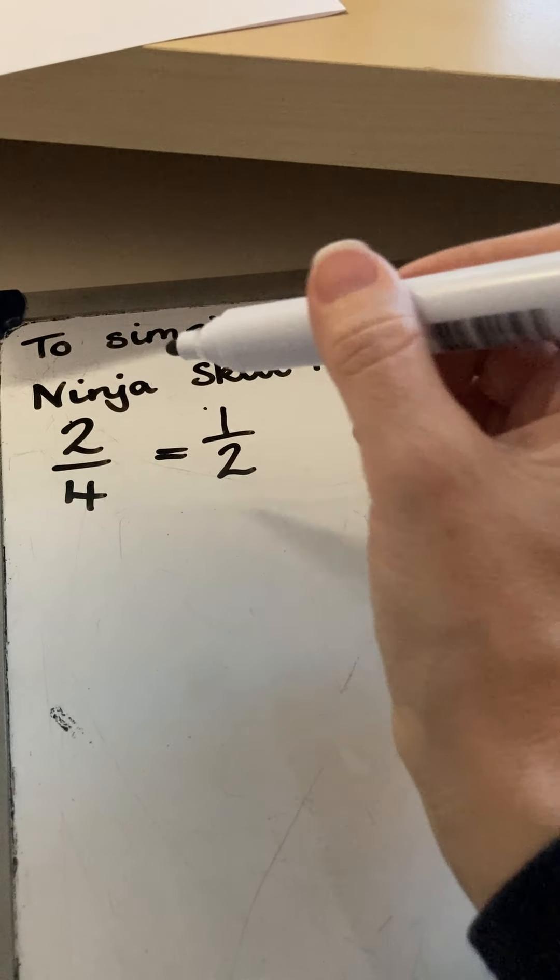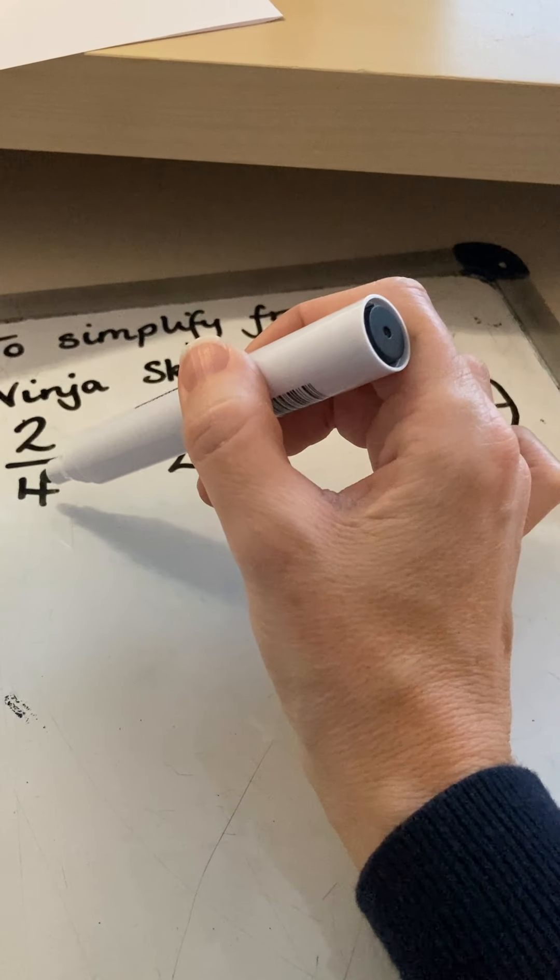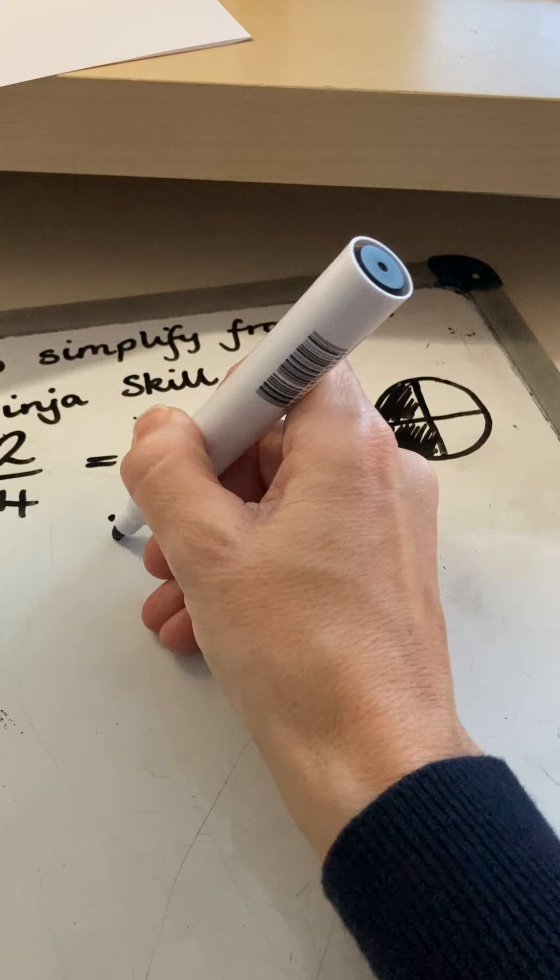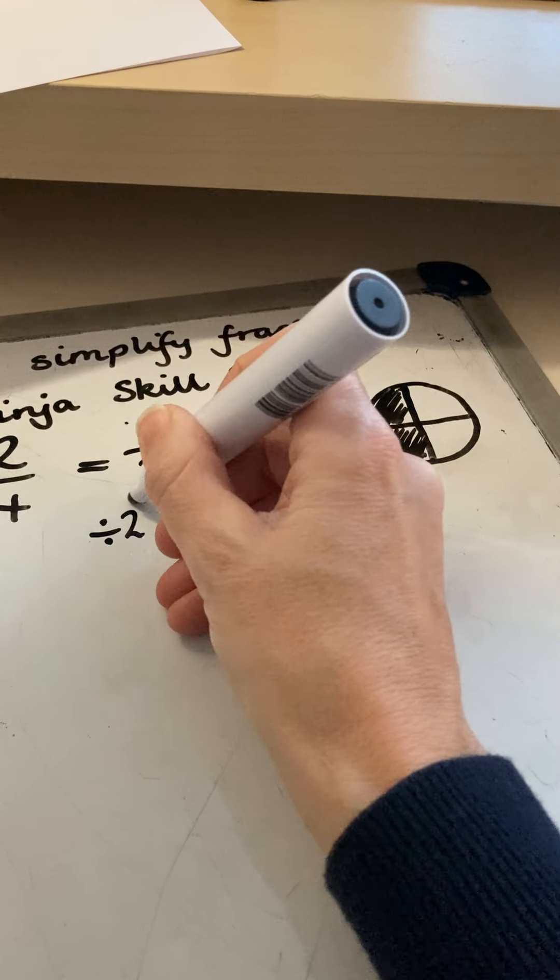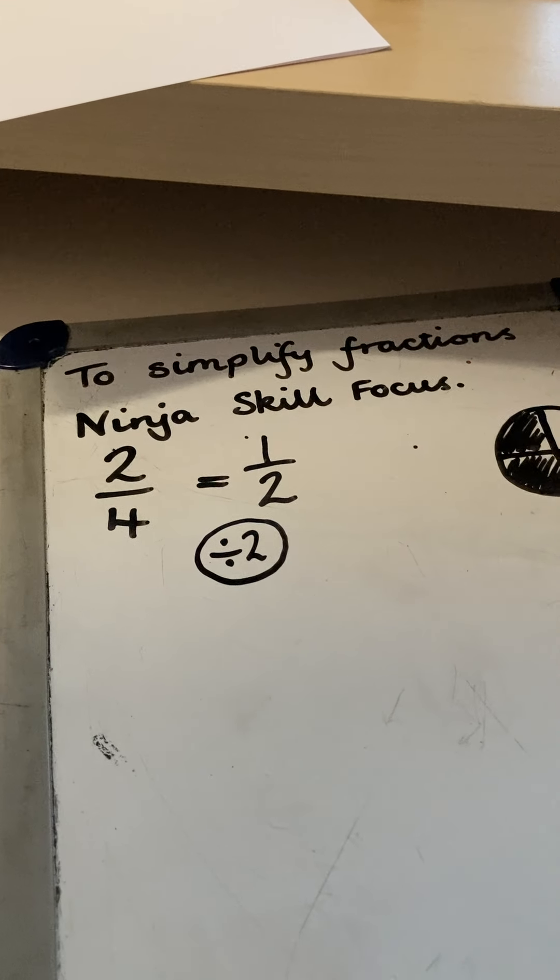So if you divide two by two, it gets you to one, four divided by two, and you have two. So if we divide both of them by the same number, we find our answer.